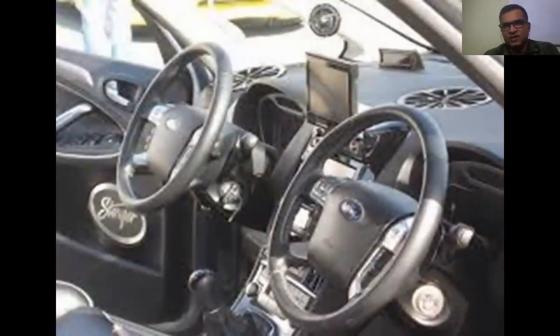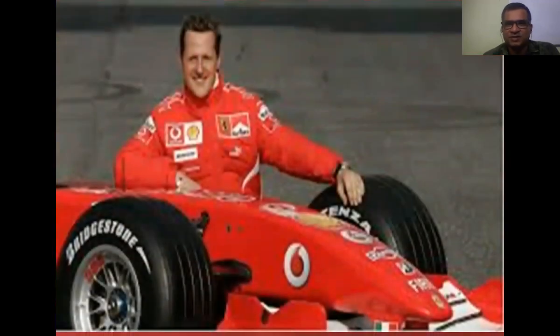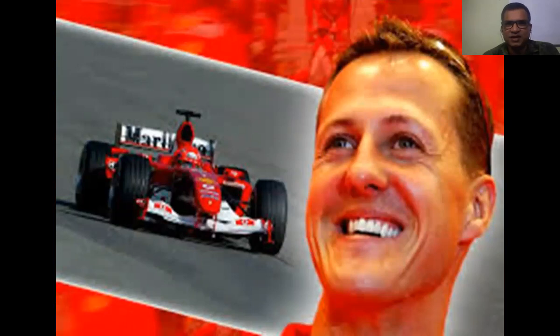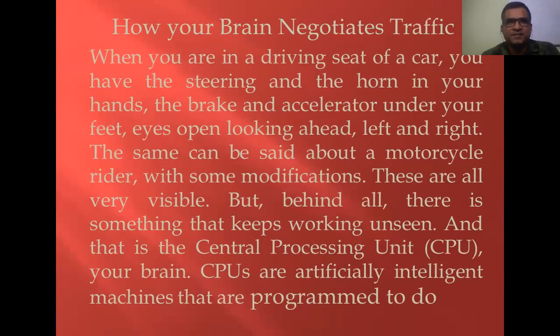Here you can see the interior of a private car — the inside picture of a private car. This is a steering. Do you know this person? He is a racer. His name is Michael Schumacher, a German racer. He drives the car at 300 miles per hour — a horrible speed. And this is the text: 'How Your Brain Negotiates Traffic.' Let us study.